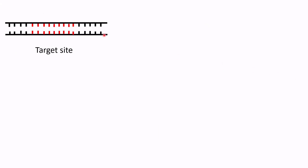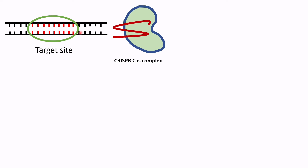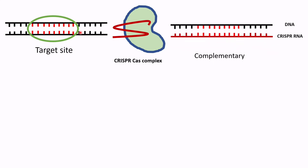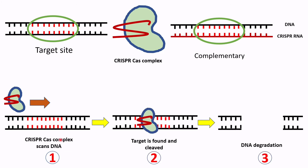Suppose this is our DNA and this is the target site — that means you need to degrade this part. Cas is required to undergo this degradation, but how does Cas recognize the target site? Here CRISPR comes in. CRISPR is called guide RNA as it guides the Cas protein to the target site in the DNA. The target site is complementary to the guide RNA, so CRISPR starts to scan the DNA and finds its target site.